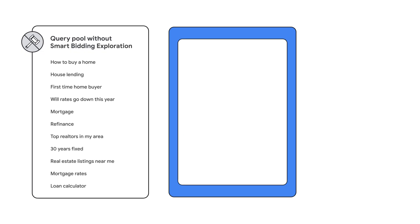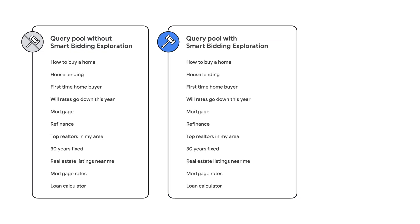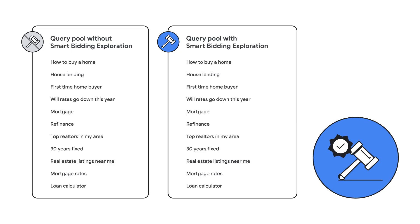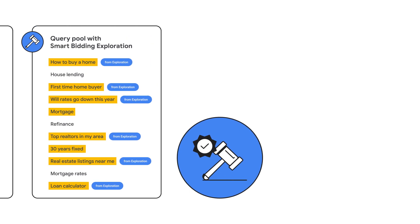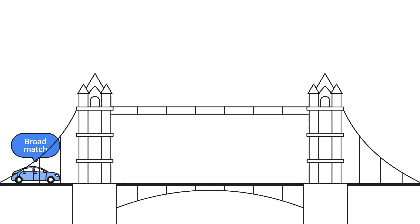Smart Bidding Exploration uses Google AI to bid opportunistically on searches that were just out of reach. Using Google AI and flexible ROAS targets, with this tool you can discover and capture new searches and additional conversions from the traffic you're eligible for but wouldn't have otherwise bid on. In this video you'll learn how to enable exploration and view reporting metrics.